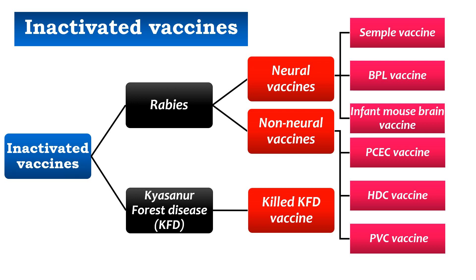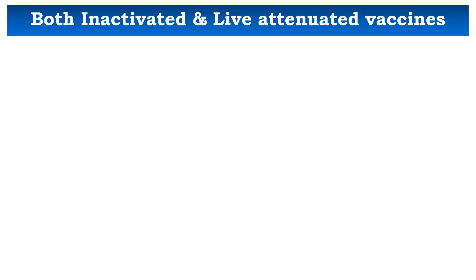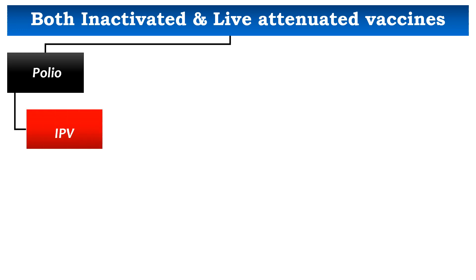We are done with inactivated viral vaccines. We will now discuss the intermediate group, where we have both inactivated and live attenuated vaccines against a single viral disease. Starting with polio — against polio we have two vaccines: IPV (Injectable Polio Vaccine) and OPV (Oral Polio Vaccine). IPV was first discovered by Jonas Salk in 1952; the polio virus is grown in monkey kidney cell lines and inactivated with formalin.